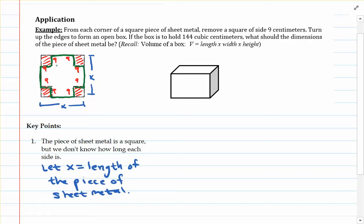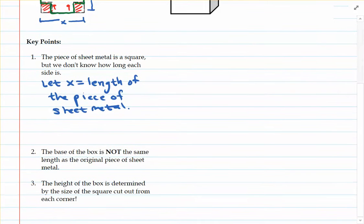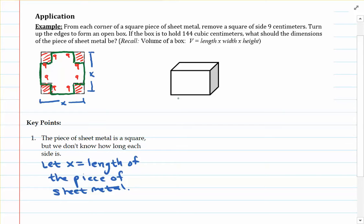So essentially, what's going to happen is once those corners are removed, these flaps are going to be turned up to form the sides of the box. Which brings me to another key point. Number two, the base of the box is not the same length as the original piece of sheet metal. So at this box up here, we can't say that the base of the box is an x by x. Because remember, this box is being formed by taking away nine by nine squares from each corner of the piece of sheet metal.